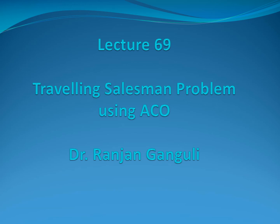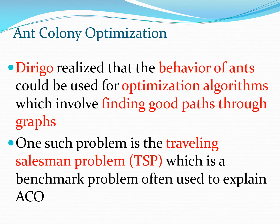Today I'm going to start lecture 69 in the optimization series and discuss the traveling salesman problem. We are going to begin solving this problem using the ant colony optimization method. I'm Dr. Ranjan Ganguly. In the previous video I discussed the process ants use to find the best path between their nest and a food source. A computer scientist named Derigo realized that ant behavior could be used to develop optimization algorithms, especially those involving finding good paths through graphs. One such problem is the traveling salesman problem, a benchmark problem in optimization often used to explain ant colony optimization.